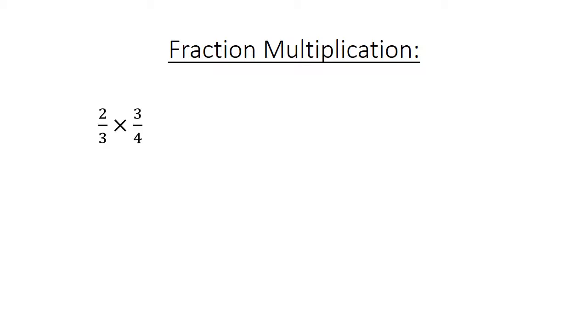Fraction multiplication: 2 over 3 times 3 over 4 equals 6 over 12, which equals 1 over 2. Fraction division: 2 over 3 divided by 3 over 4 equals 2 over 3 times 4 over 3, which equals 8 over 9.